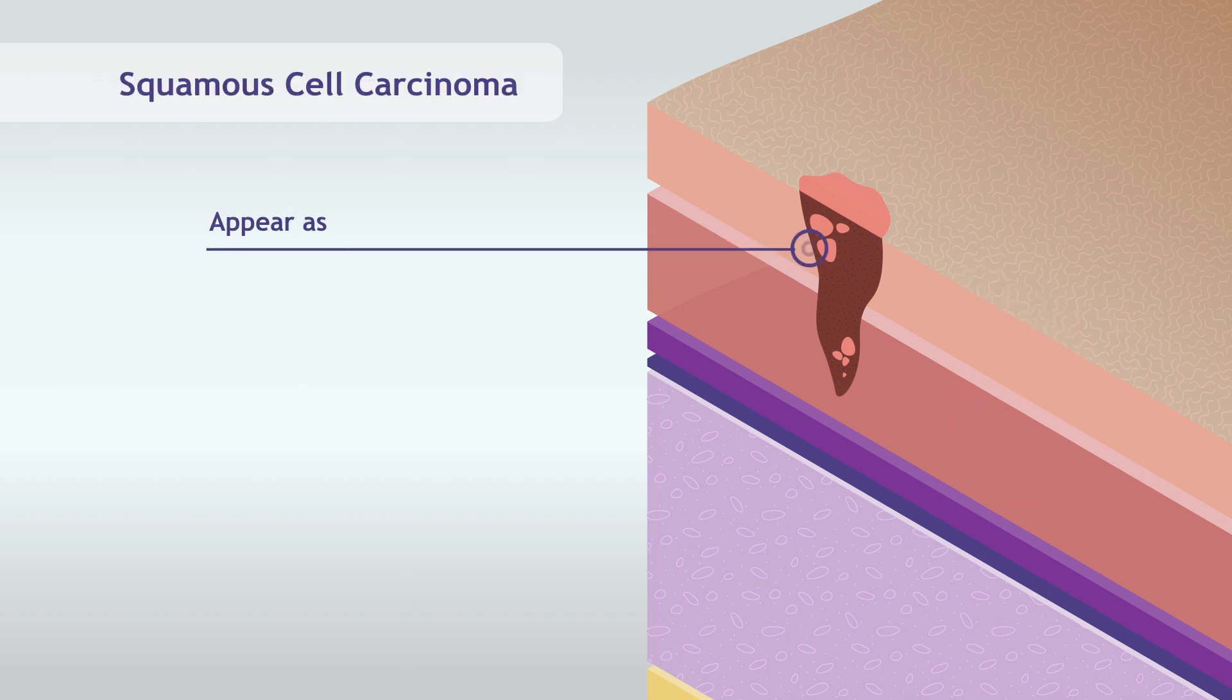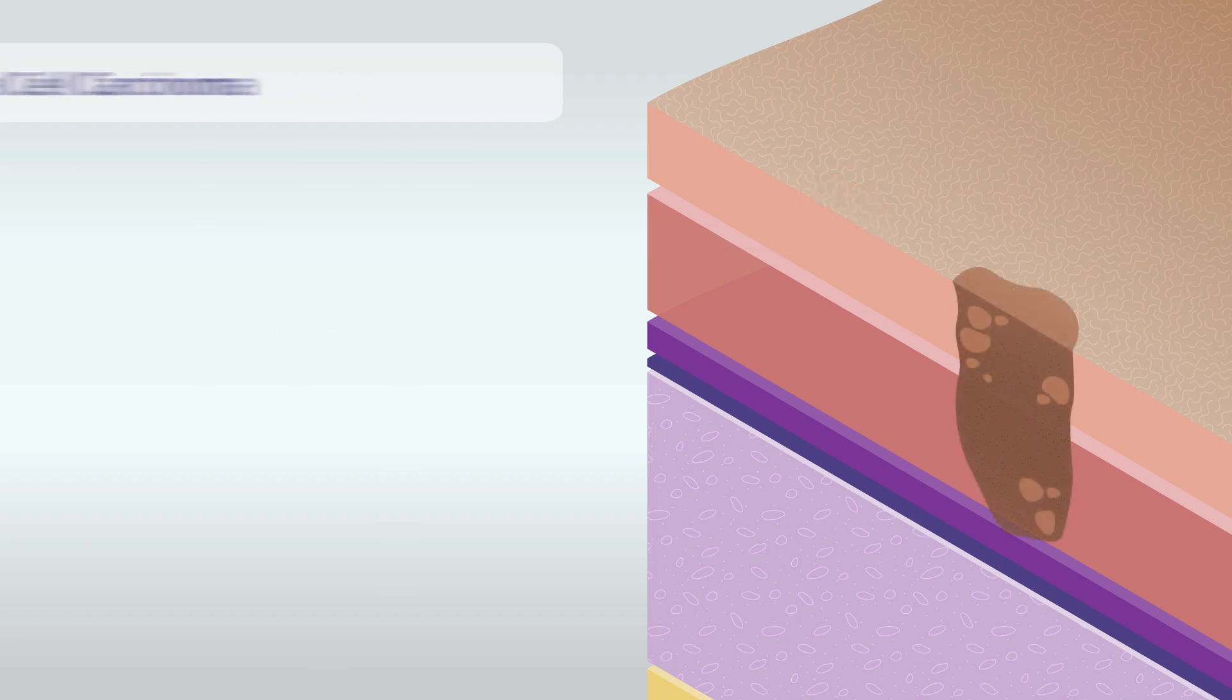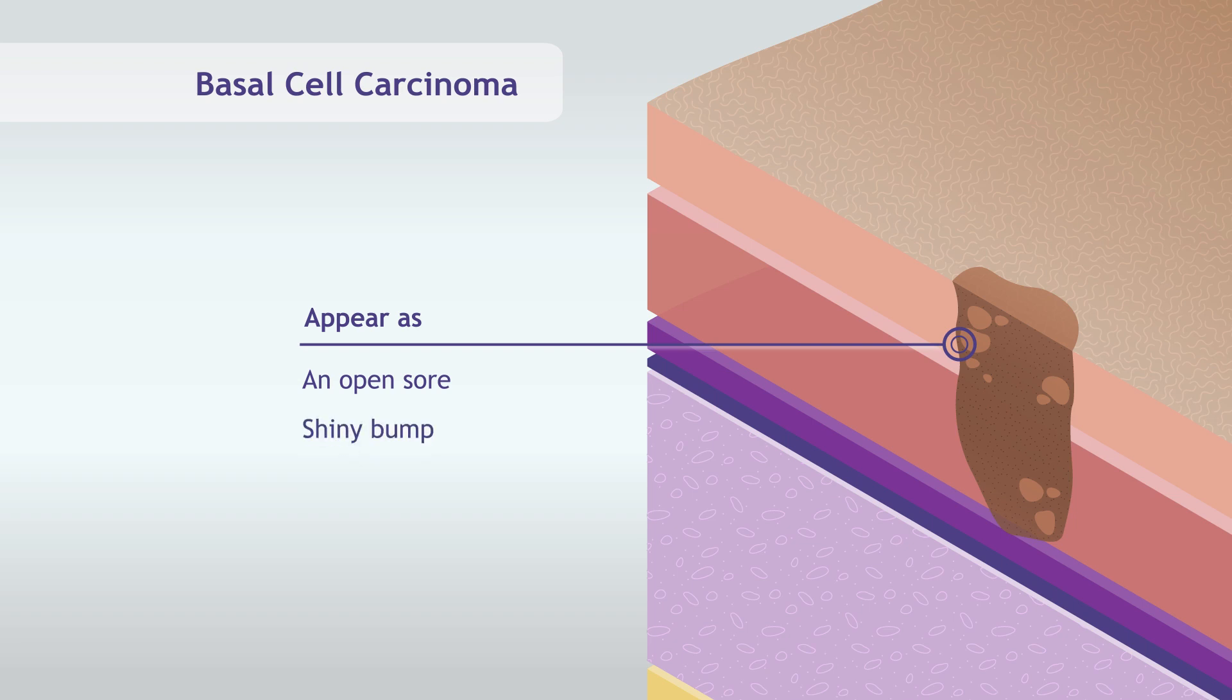Squamous cell carcinomas may look like a red bump or a scabbed sore. Basal cell carcinomas usually appear as an open or scabbing sore, a shiny bump, a red irritated patch of skin, or a scar-like area of the skin.